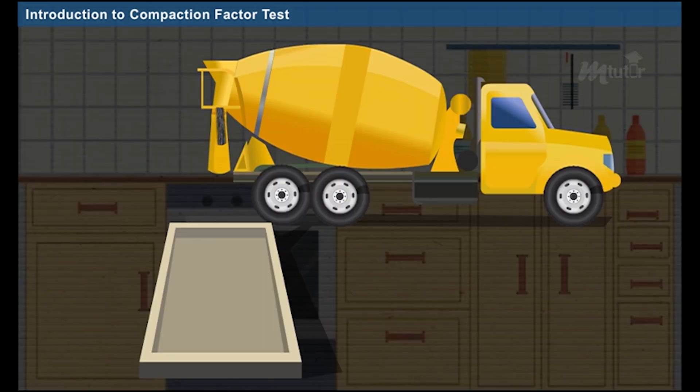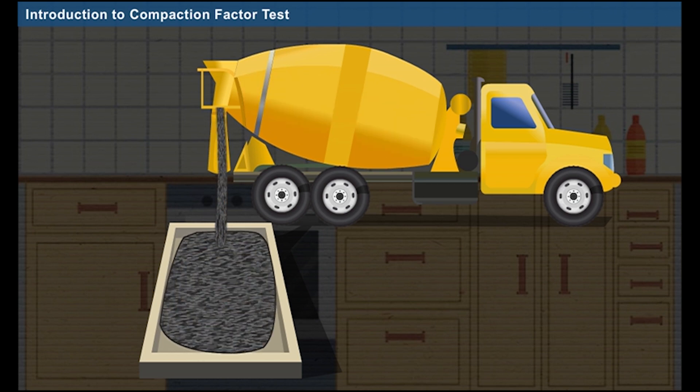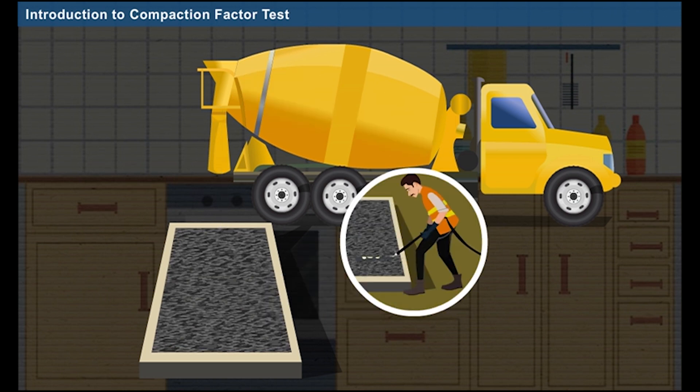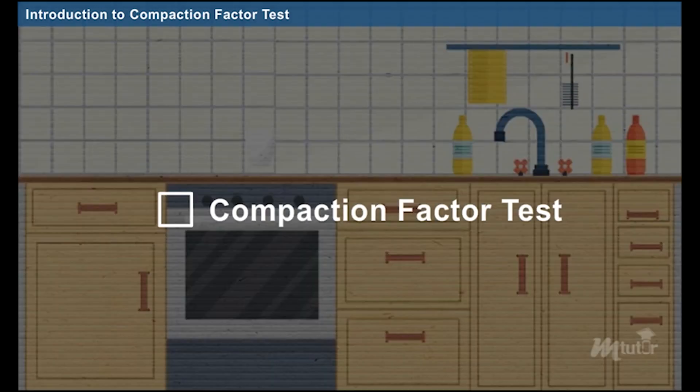Likewise, when the concrete is made to fall from a certain height, concrete gets compacted internally and then a lesser amount of external force is applied to compact the remaining concrete. Thus, its compaction efficiency will be more. The test which considers this factor is called as compaction factor test.